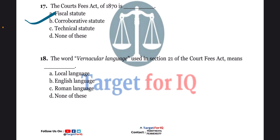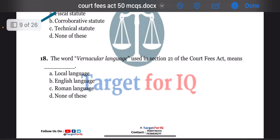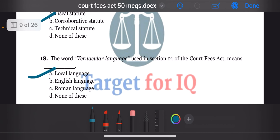Next question: the word vernacular language used in section 21 of the act means dash. The options are A. Local language, B. English language, C. Roman language, or D. None of these. The correct answer is option A. Local language.